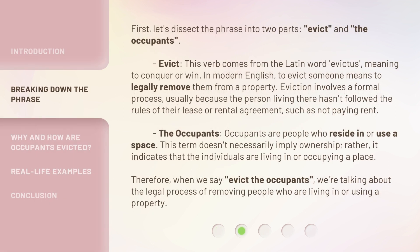First, let's dissect the phrase into two parts: 'evict' and 'the occupants.' Evict — this verb comes from the Latin word 'evictus,' meaning to conquer or win. In modern English, to evict someone means to legally remove them from a property. Eviction involves a formal process, usually because the person living there hasn't followed the rules of their lease or rental agreement, such as not paying rent.